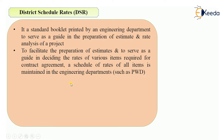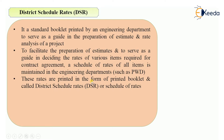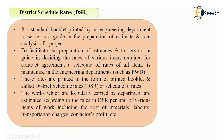These rates are printed in the form of a booklet called District Schedule Rates or DSR, also called Schedule of Rates. Works regularly carried out by the department are estimated according to the rates given in the DSR per unit of various items of work, including the cost of materials, labor, transportation charges, and contractor's profit. For example, it will have per-bag cost of cement, per cubic meter cost of sand and aggregate.